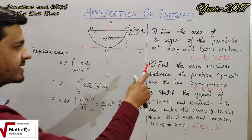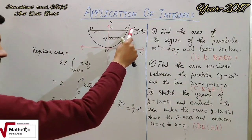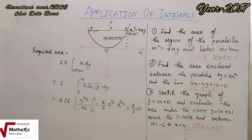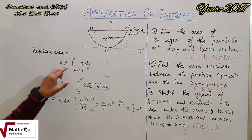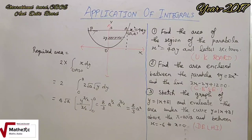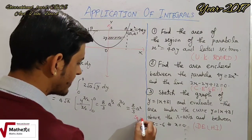इसी तरीके से question में change होकर y² = 4x भी बन सकता है। उस case में parabola इस तरफ बनेगा और area उतना ही आएगा। Formula में x dy की जगह y dx लगाना होगा। Unit square units होगी।